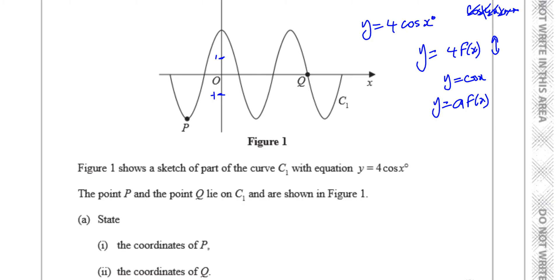The lowest value for y equals cosine x is minus 1, and they occur at the same x positions for y equals 4 cosine x because the x values don't change. Normally y equals cosine x reaches 1 when x is 0, but now when x is 0 it's going to reach 4. And down here is going to be minus 4 — that's the coordinate of point P.